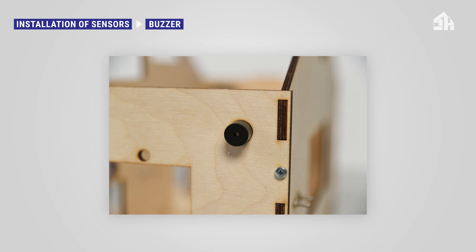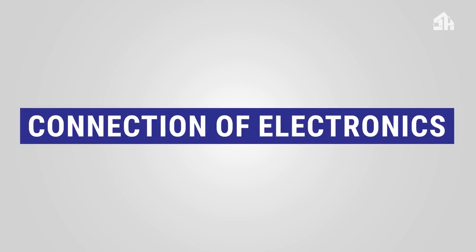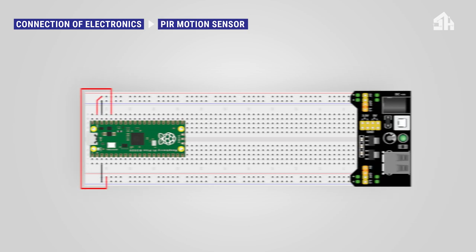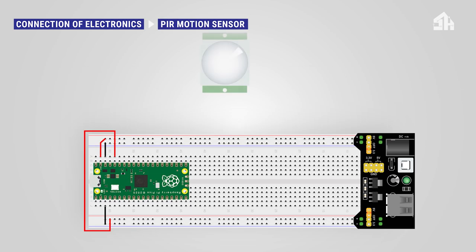For installing the PIR motion sensor, connect the red cable to the five volt rail, connect the black cable to the GND rail, and connect the yellow cable to GPIO 22 pin.